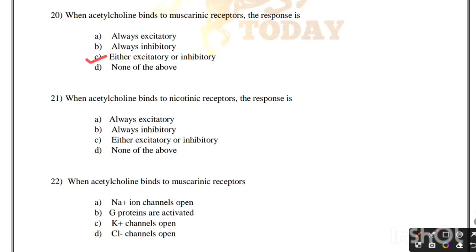When acetylcholine binds to nicotinic receptors, the response is: always excitatory, always inhibitory, either excitatory or inhibitory, or none of the above. Correct answer is option A, always excitatory.